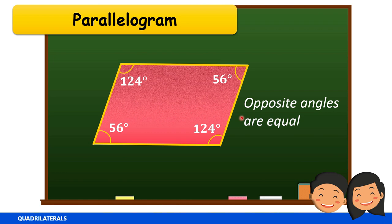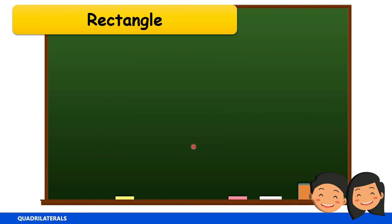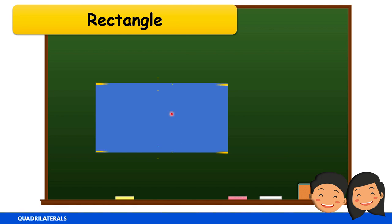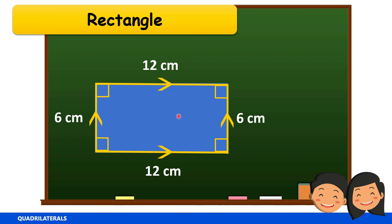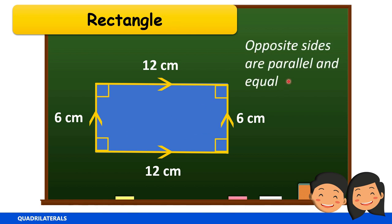A rectangle is a parallelogram. It has two pairs of opposite sides that are congruent — if this side is 12 centimeters, the opposite side is also 12 centimeters; if this side is 6 centimeters, the opposite side is also 6 centimeters. All angles in a rectangle are right angles, each measuring 90 degrees. In a rectangle, opposite sides are parallel and equal, and every angle is a right angle.